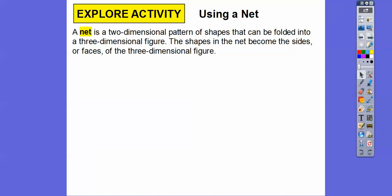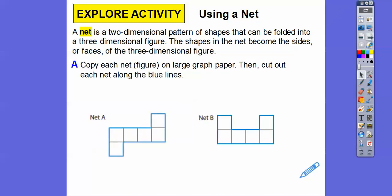A net is a two-dimensional pattern of shapes that can be folded into a three-dimensional figure. The shapes in the net become the sides or the faces of our three-dimensional figure.